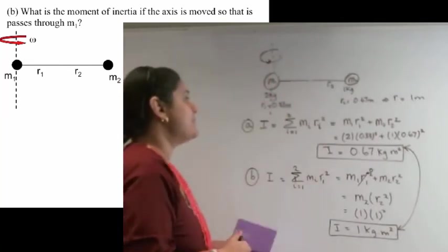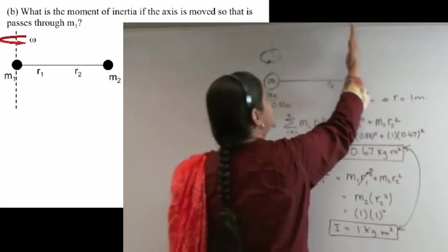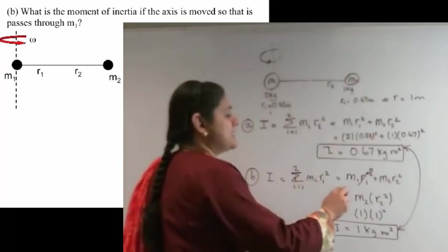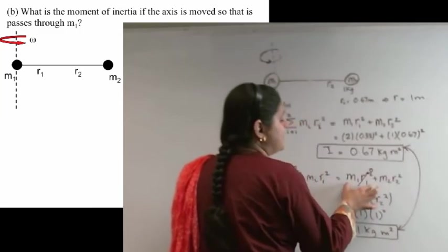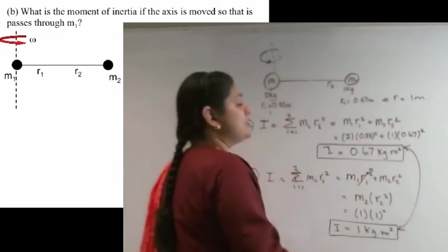Now, on the other hand, if I was to move it towards this mass, what would happen? Well, in that case, this r2 will go to 0, and I will be using m1 to do the rest of my calculation.